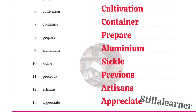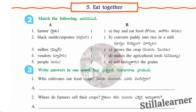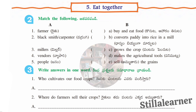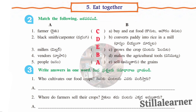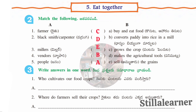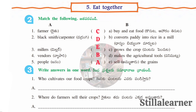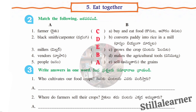The second section is match the following. Farmer — C: grow the crops; blacksmith — D: makes the agricultural tools; miller — E: sell the grains; vendor — B: converts paddy into rice in a mill; people — A: buy and eat food.